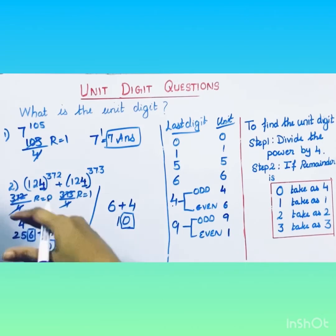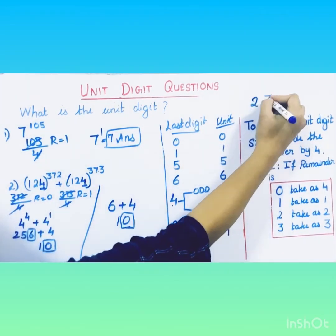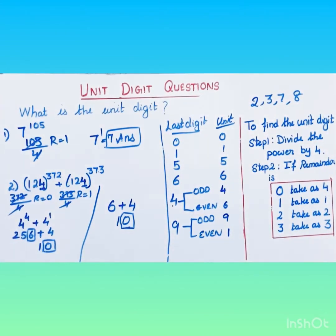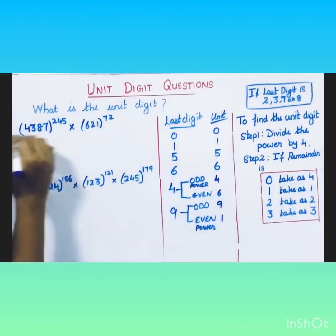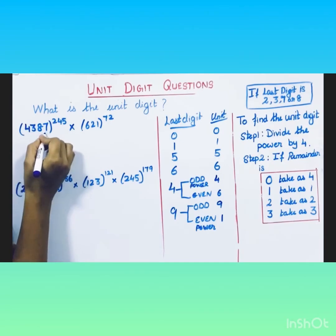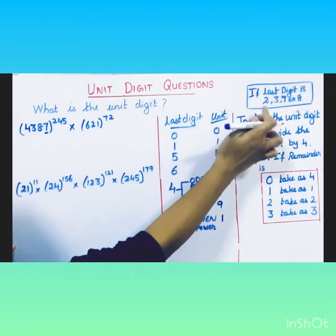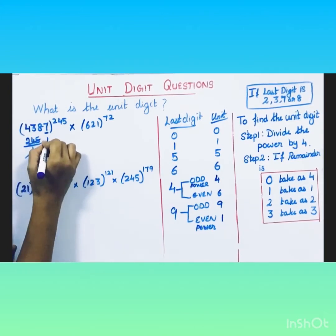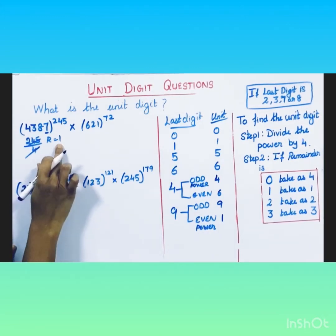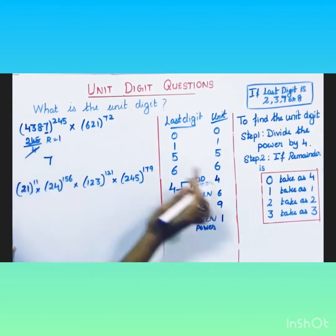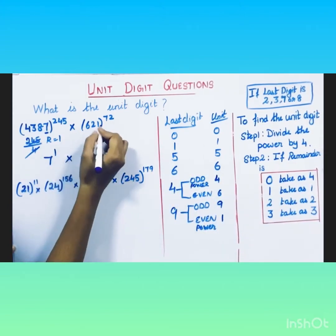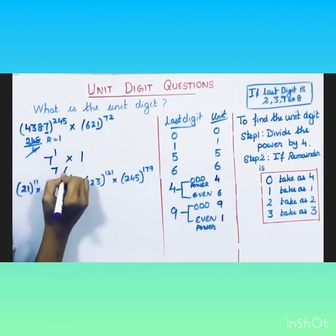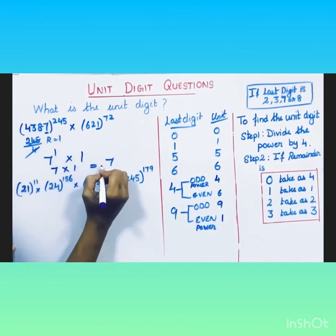For remaining last digits 2, 3, 7, or 8, you follow the divide-by-4 method. For example, if the last digit is 7, take the power and divide by 4 — the remainder is 1, so take the last digit raised to power 1, which gives 7. If the last digit is 1, the unit digit is simply 1. So 7 to the power 1 is 7, multiplied by 1, gives a unit digit of 7.